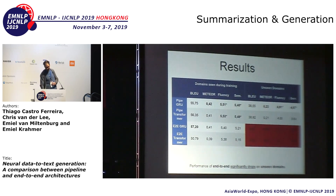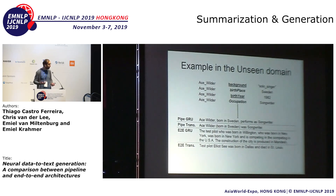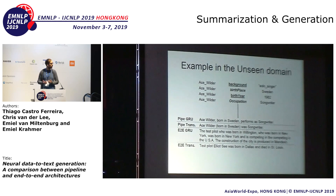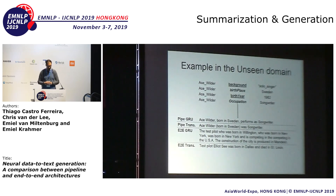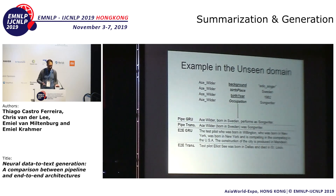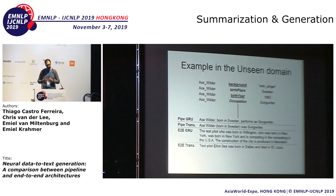An example of what's going wrong: this is an example from Ace Wilder, apparently a singer from Sweden. The pipelines produce quite a good sentence: 'Ace Wilder, born in Sweden, performs as a songwriter.' The end-to-end output goes really wrong: 'The test pilot who was born in Wellington, who was born in New York, and is competing in the USA. The construction of the city is produced in Mondesh.' It's basically rubbish. Another end-to-end output: 'Test pilot Elliot C was born in Dallas and died in St. Louis' — not at all aligned with the actual data. So there is a lot of over-generation going on, and not all information is retained.